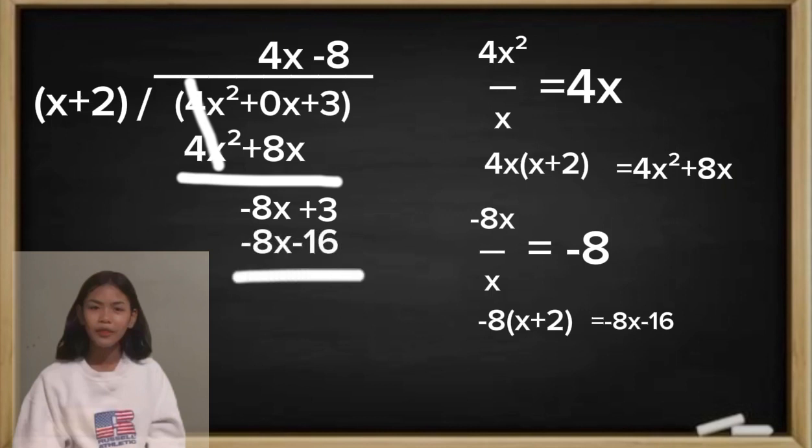And then subtract to the dividend. That will become negative 13. Because negative 8x minus negative 8x is cancelled out.